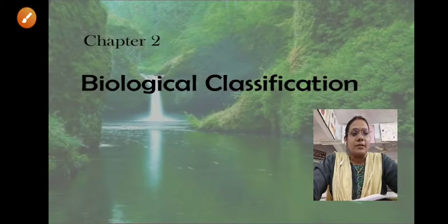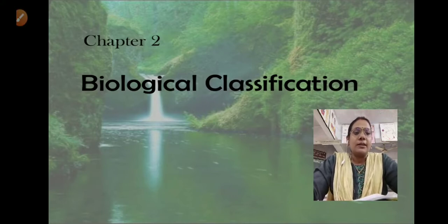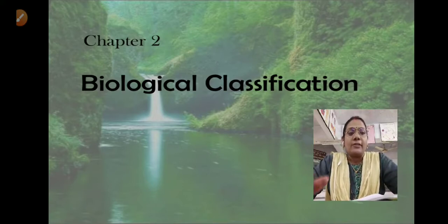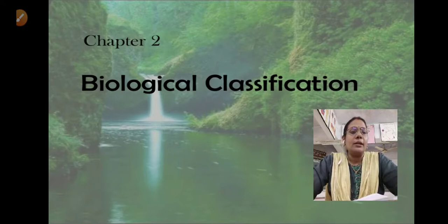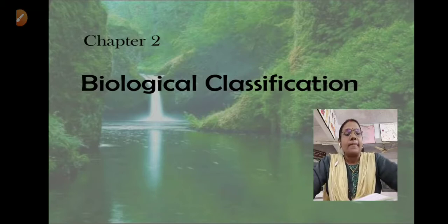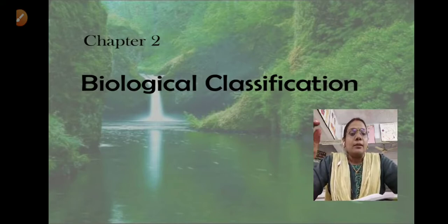Welcome students, Class 11. This video covers Chapter 2, Biological Classification. In the first chapter, we read about living organisms, their characteristics, biodiversity - how many types of living organisms are found and how we classify them according to their characters. In this chapter, we will start by reading about different classification systems given by scientists.